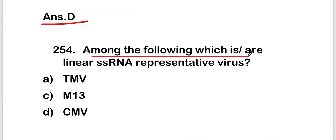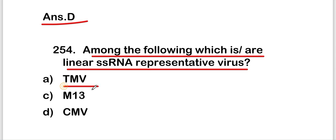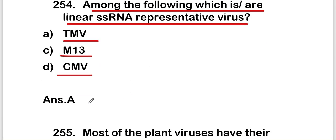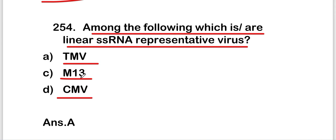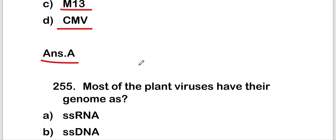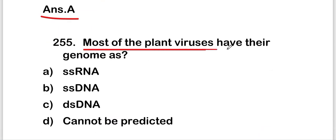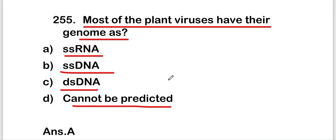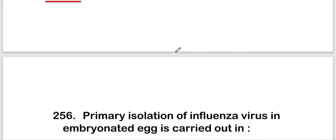The next question: among the following, which is a linear single-stranded RNA representative virus — TMV, M13, or CMV? The right answer is option A — TMV (tobacco mosaic virus) is a linear single-stranded RNA representative virus. Following that: most of the plant viruses have their genome as single-stranded RNA, single-stranded DNA, double-stranded DNA, or cannot be predicted? The right answer is option A — single-stranded RNA.